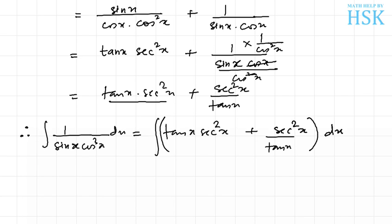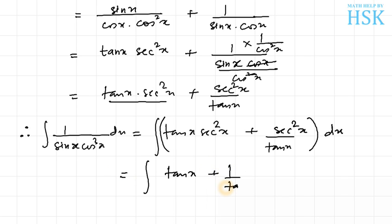Therefore, the integral of 1 upon sin x into cos cube x equals the integration of both these terms. I take sec square x as common and get the integral of (tan x + 1 upon tan x) into sec square x dx.